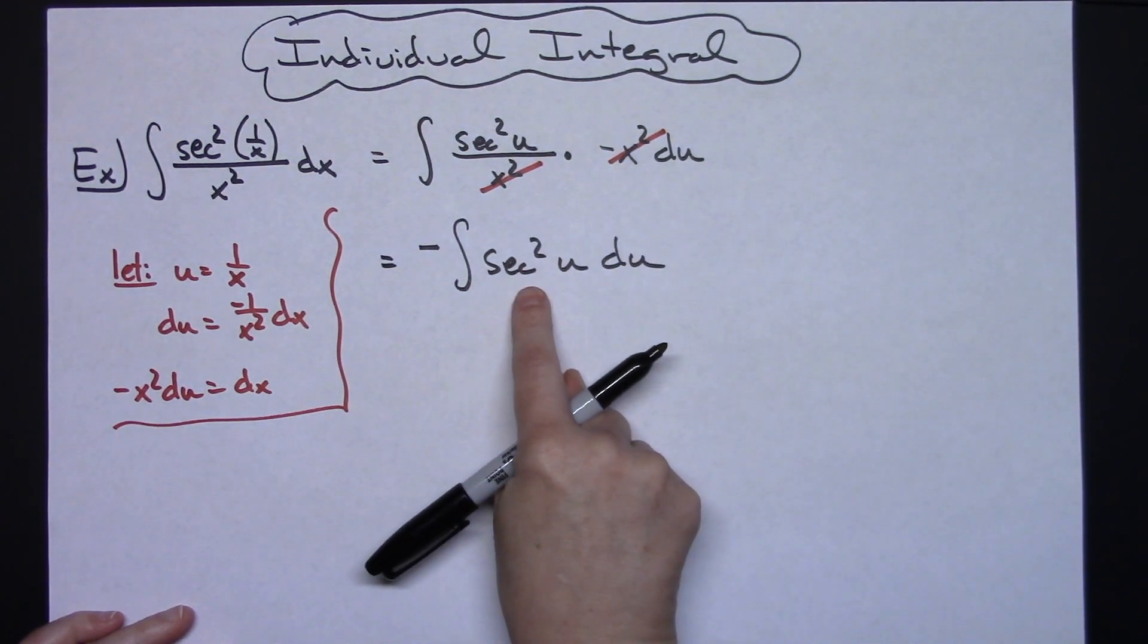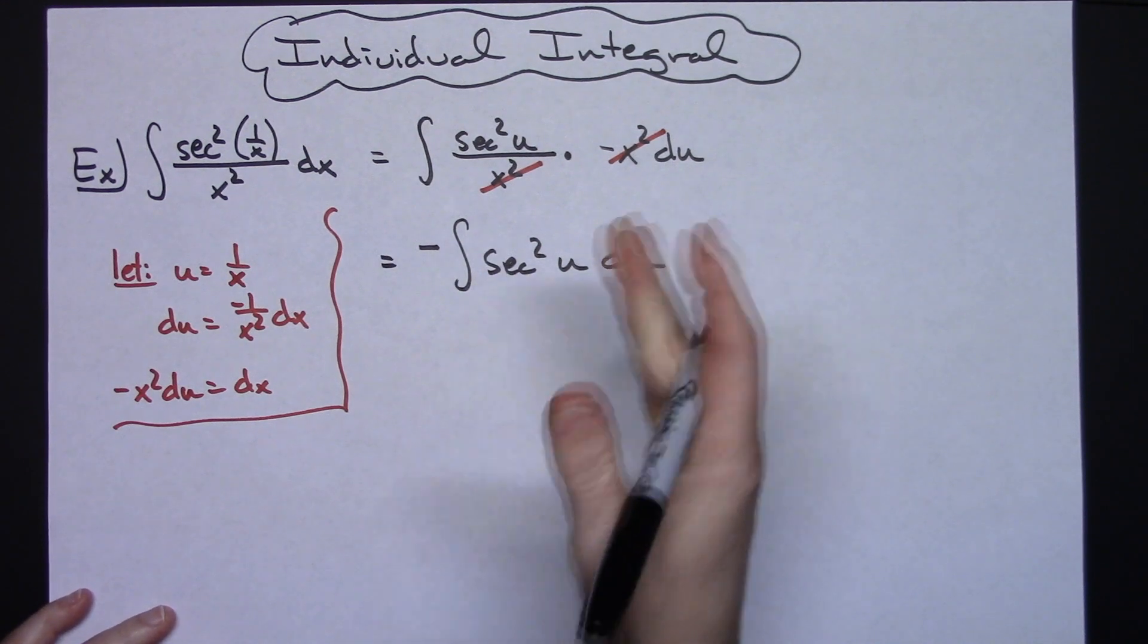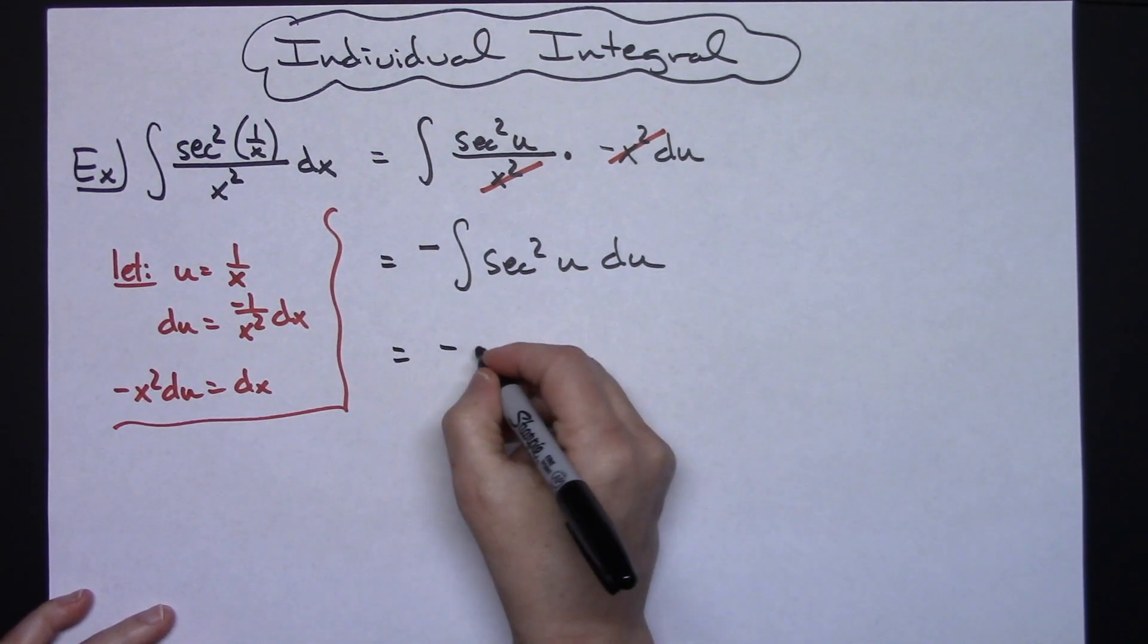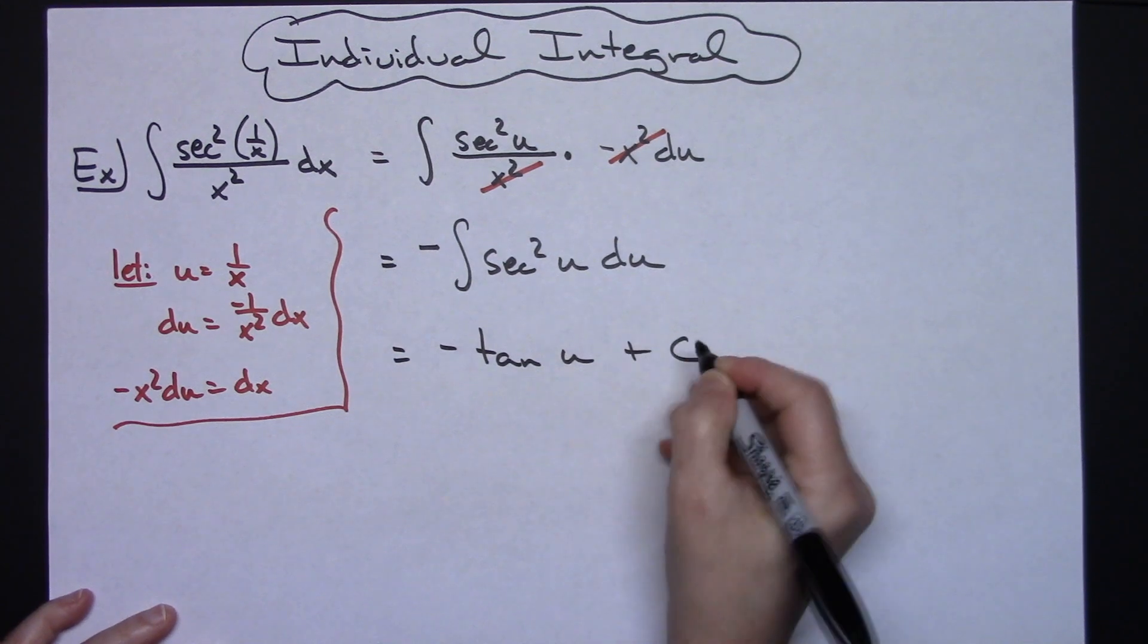At this point, hopefully, you have secant squared memorized. The integral of secant squared is going to give you a tangent. So we'll have negative tangent u plus c.